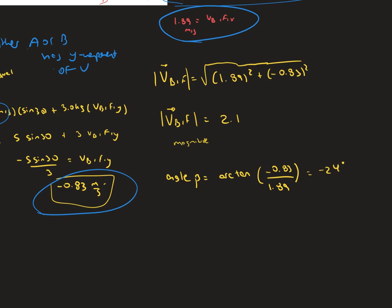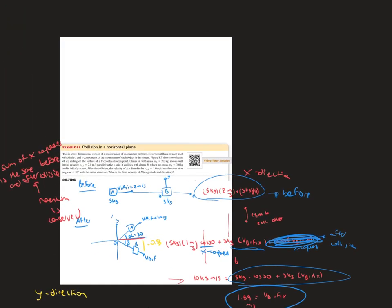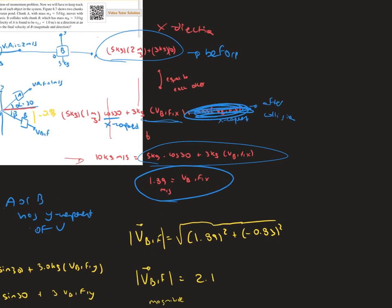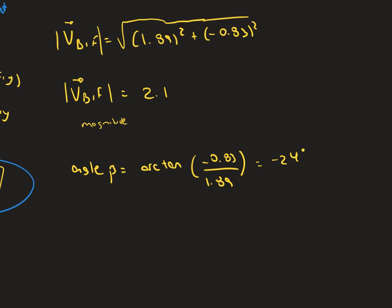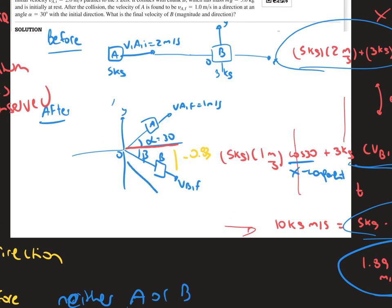But to find the direction, it's really simple. At the beginning, we didn't know the value of beta, the angle beta for the B object that is going downwards. So what we can do is use the inverse tangent, and then we plug it in on the calculator in parentheses, the y-component over the x-component. That should give us a value of negative 24 degrees, which makes sense to be negative because, as shown in the picture, the direction is downwards.